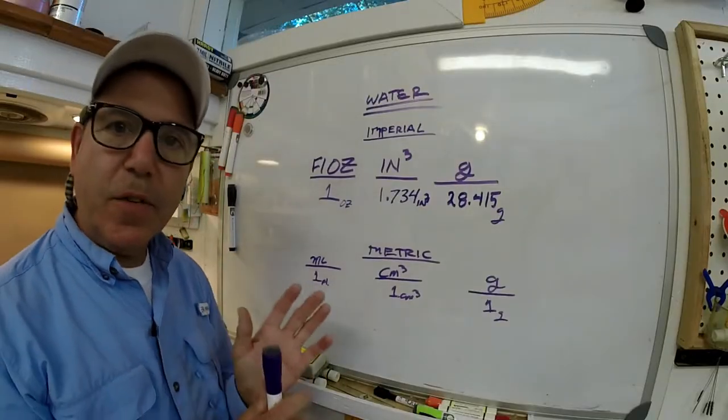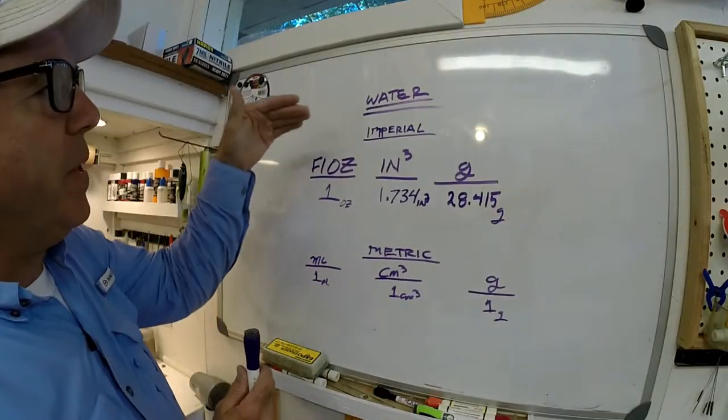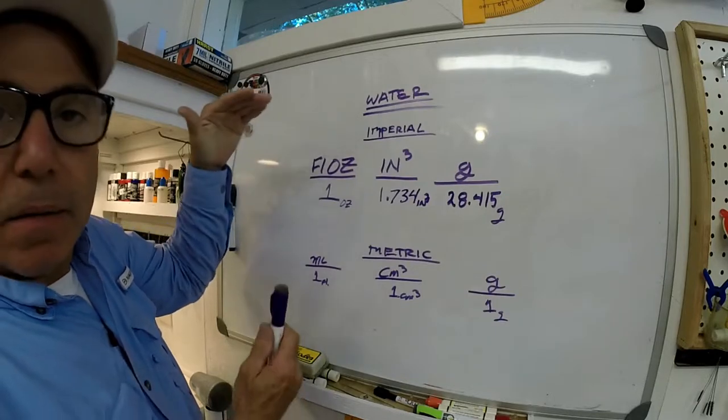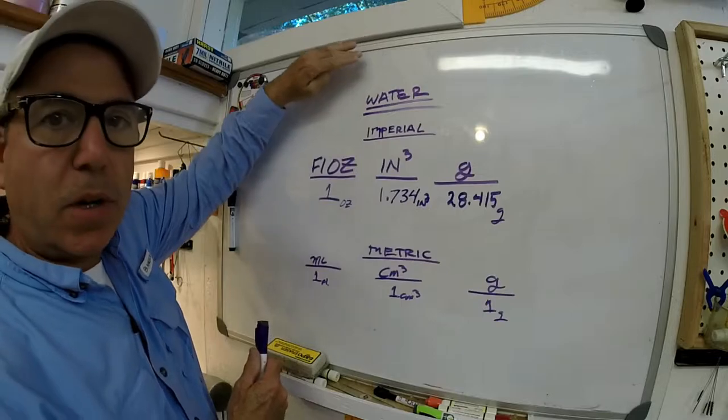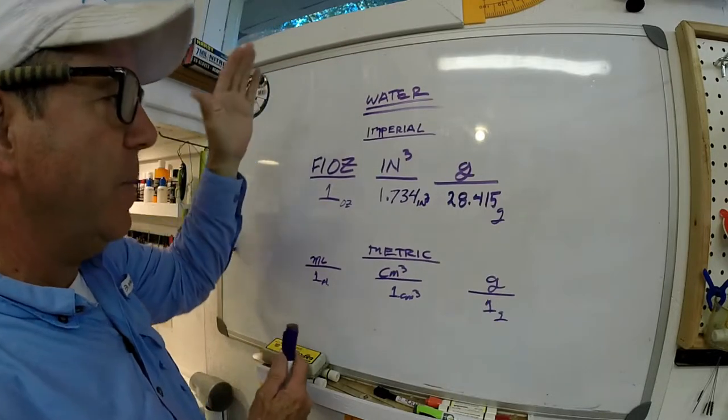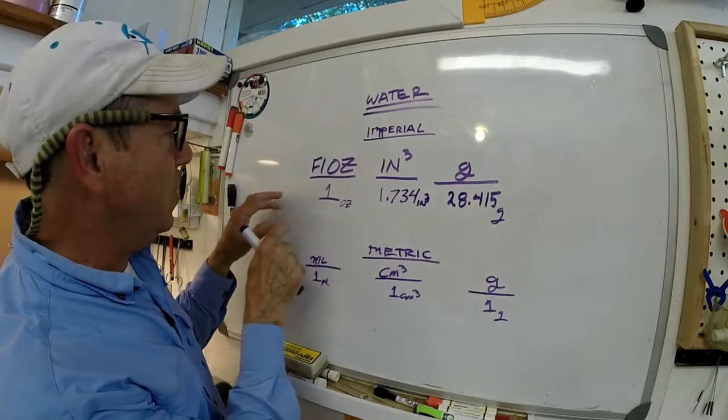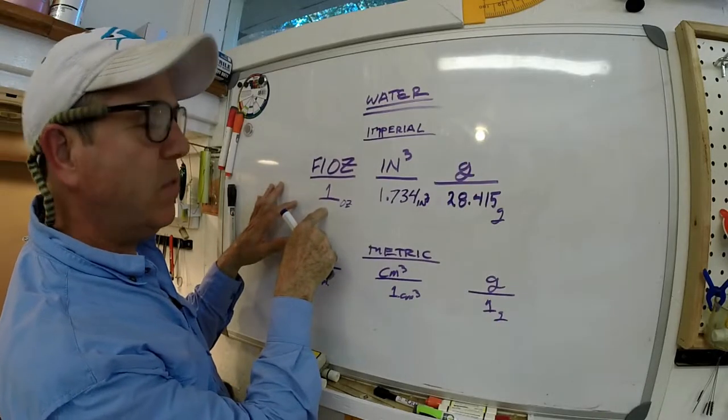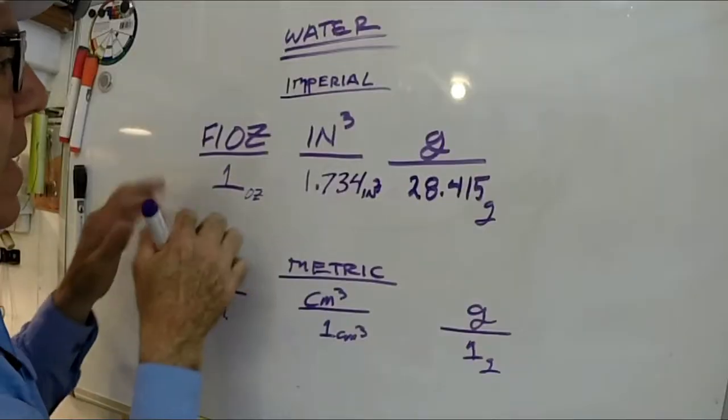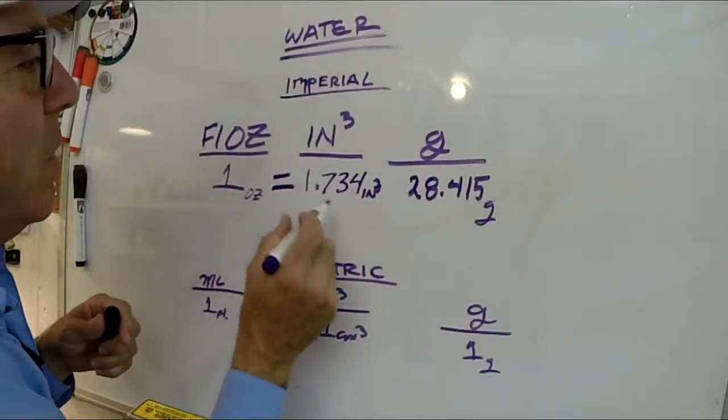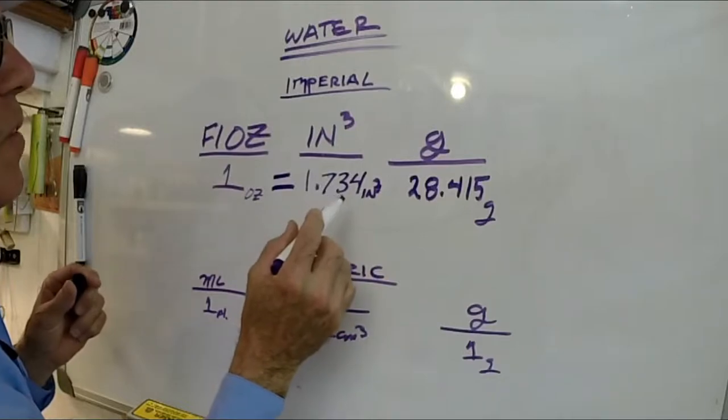Okay, so here's what the differences look like. In the imperial system, of course that's the US system, and we're talking about water now, we're talking about the weight of water, the volumetrics of water. Okay, in the imperial system, the US system, one fluid ounce, not to be confused with weight ounce, one fluid ounce equals 1.734 cubic inches.